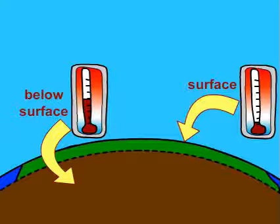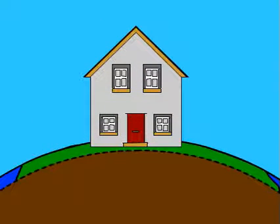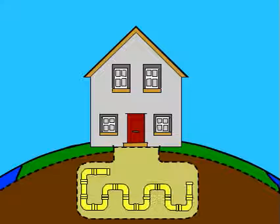Geothermal takes advantage of this consistent temperature and uses it to heat homes. So how does it work? First, a large hole is made into the ground and filled with a series of pipes.